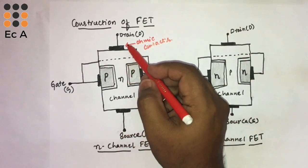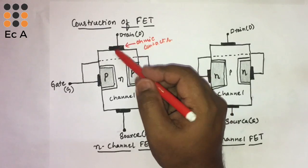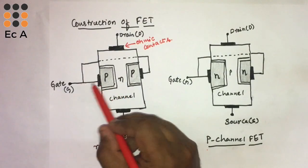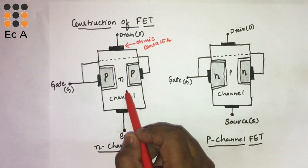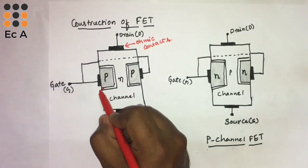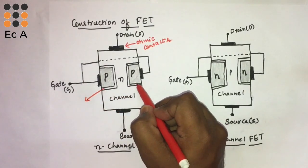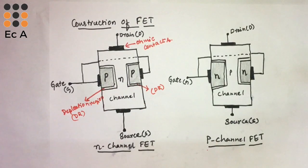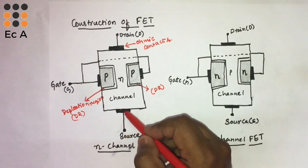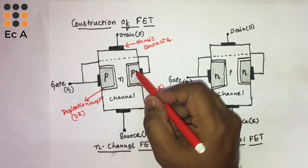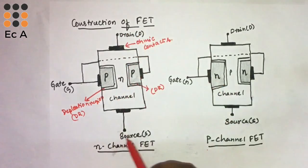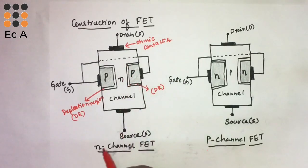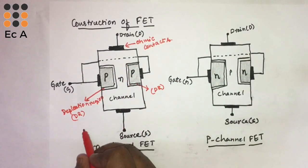The upper side of the channel is the drain terminal and the lower side of the channel is the source. The electrodes connected to the P-side are known as the gate terminal. There will be a depletion region formed between the N-type and P-type material. The electrons will enter the channel through the source and leave the channel through the drain terminal. The gate terminal is used to control the flow of electrons.